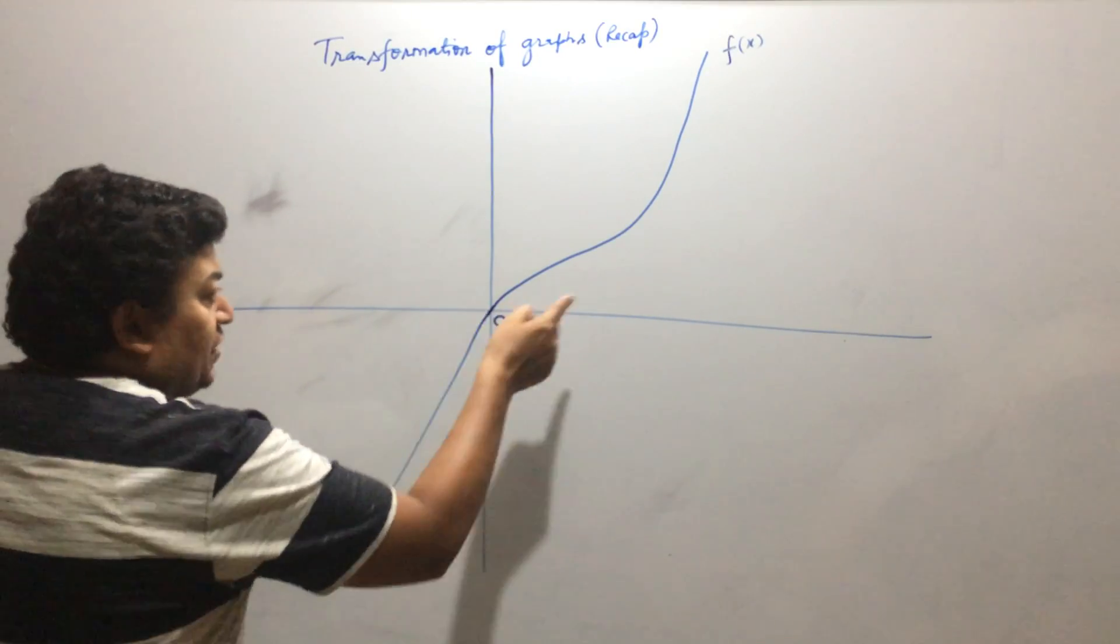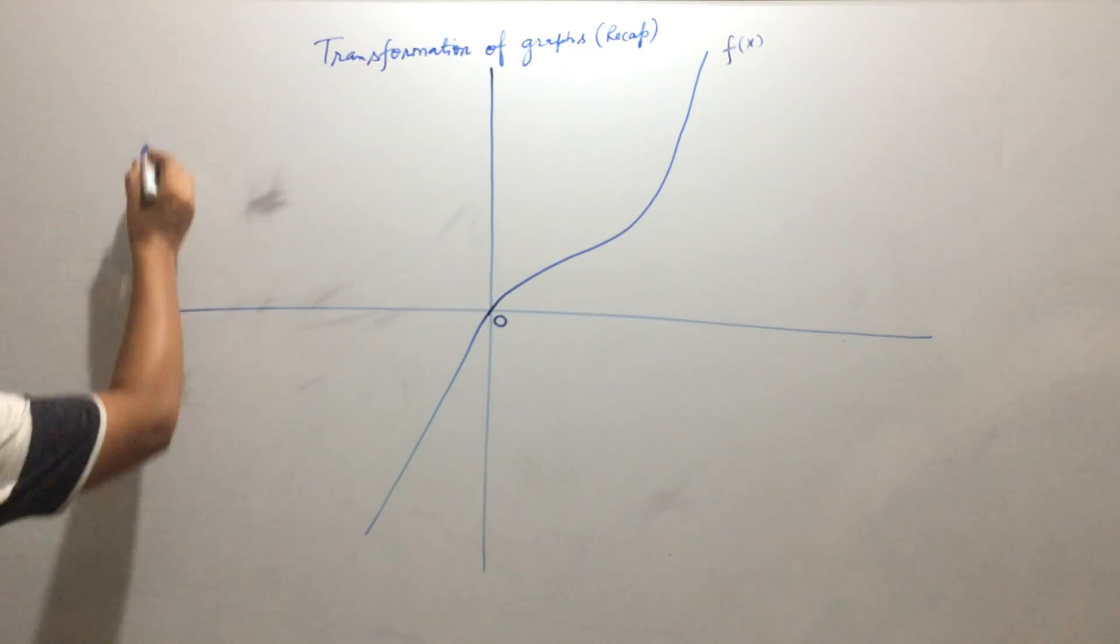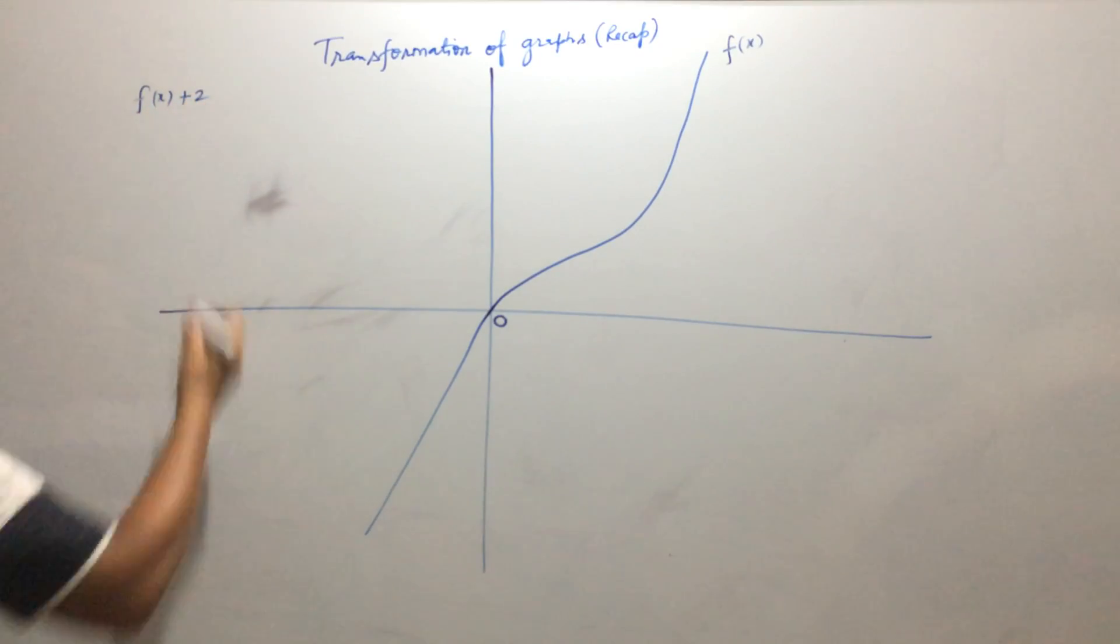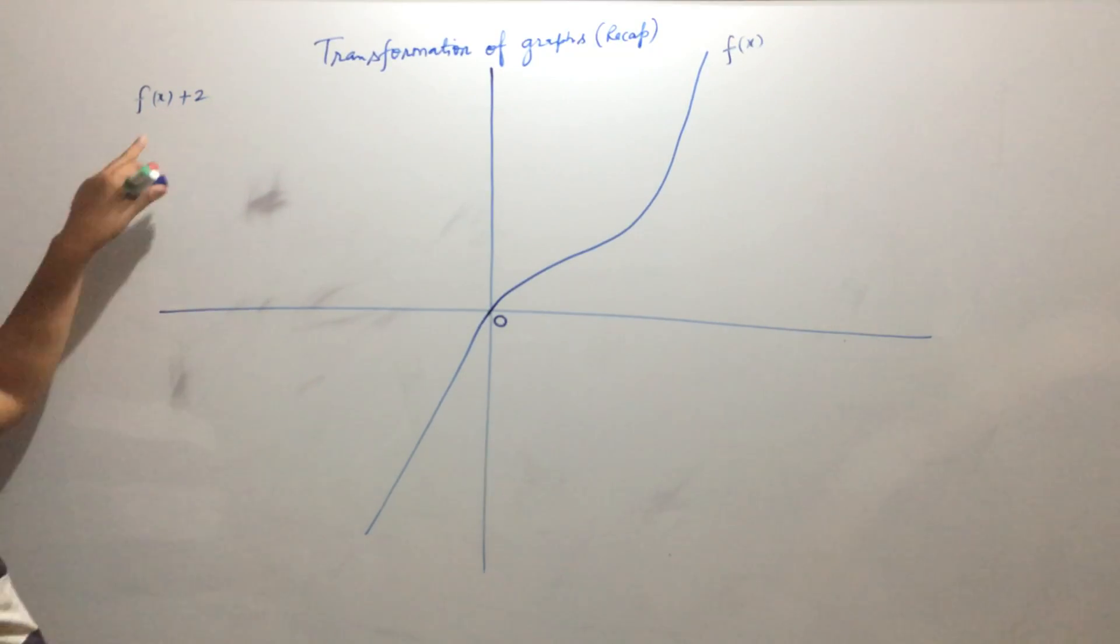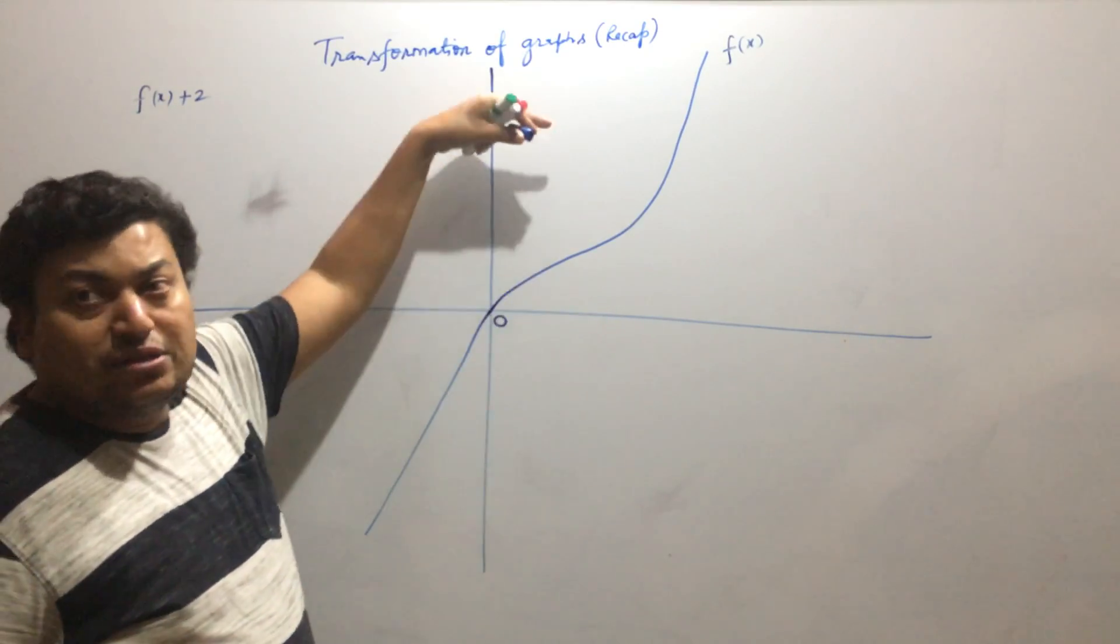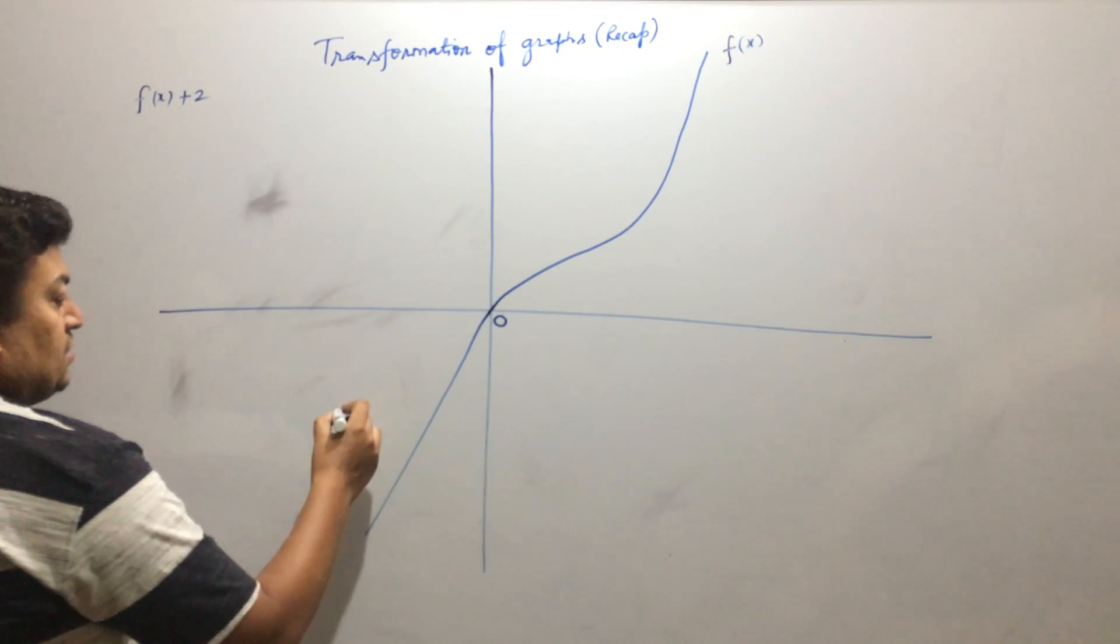So this graph is suppose f. Suppose you want to draw f plus 2. For f plus 2, the whole graph will be shifted 2 units upward. So graph will be something like this.